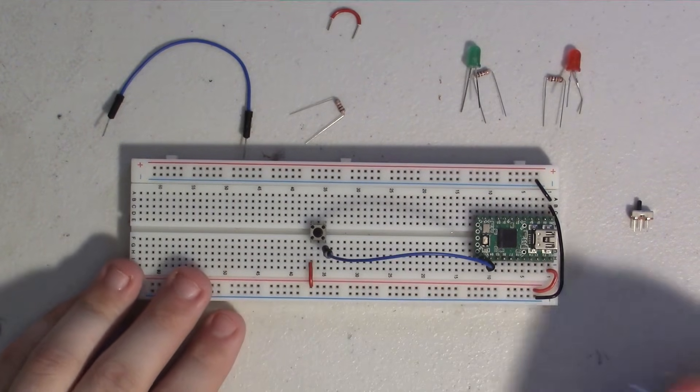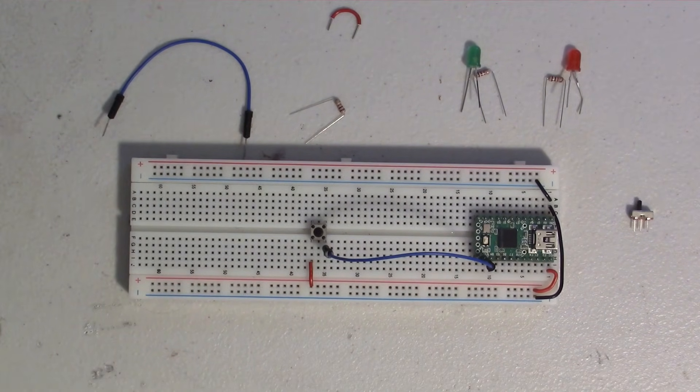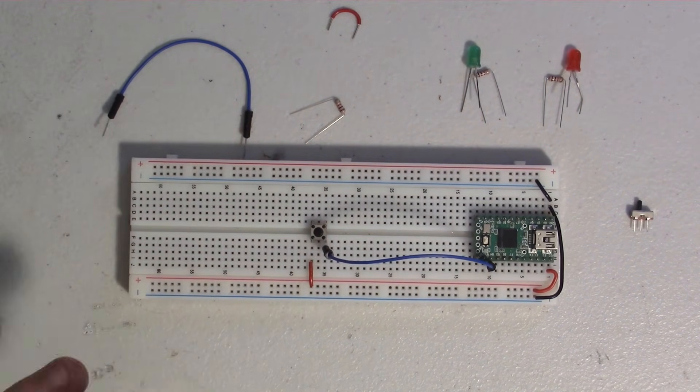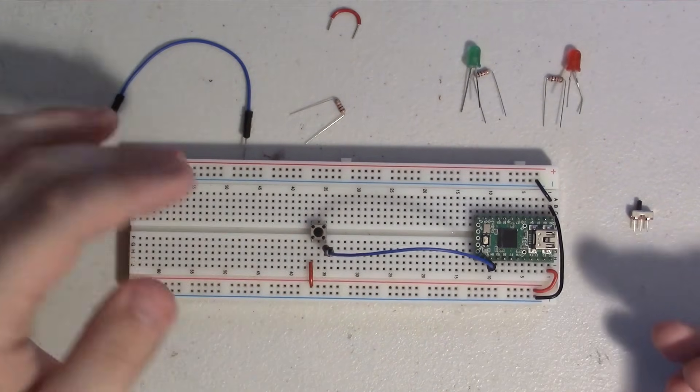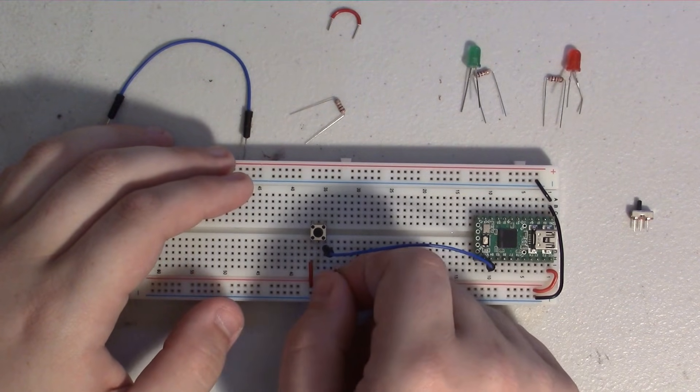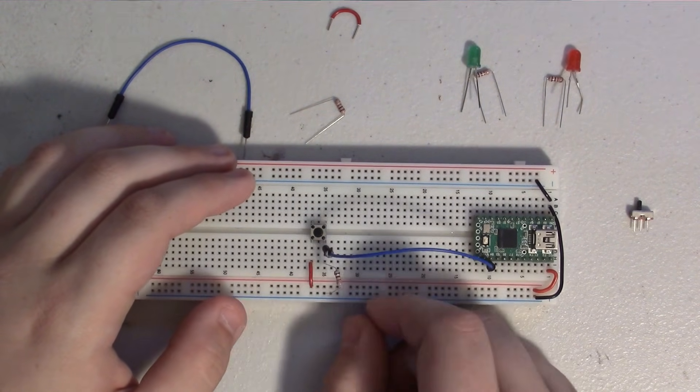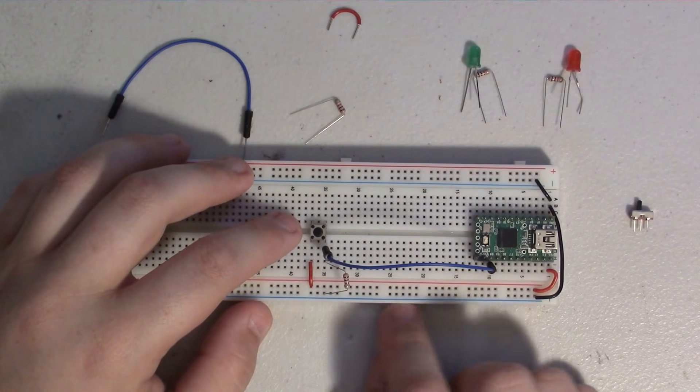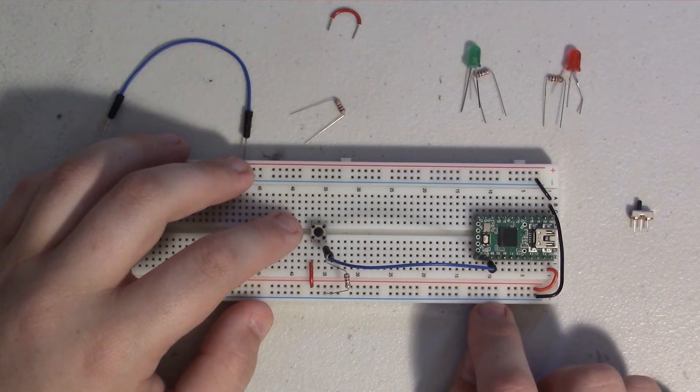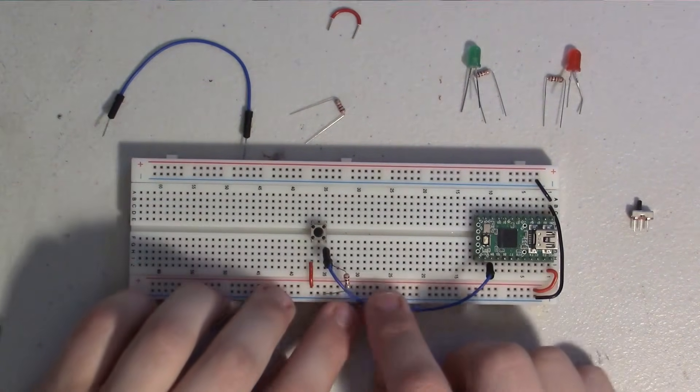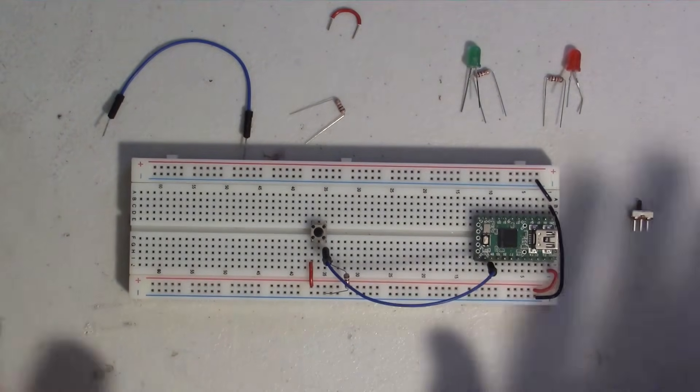Without this resistor, the pin doesn't really know what to think—it could be high, it could be low, it doesn't really know what to think until you push that button. So it won't give you very good results. So we use this pull-down resistor, is what it's called, and it basically just forces this pin into a low state connected to ground when the button isn't being pressed. So that's all it takes to wire a button—that's all the wiring.